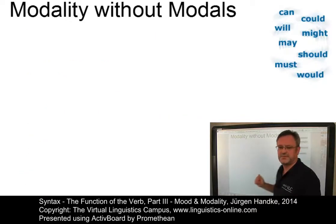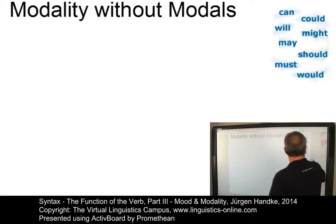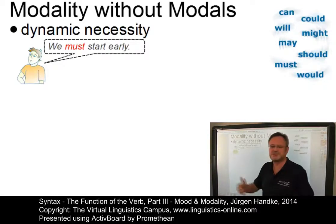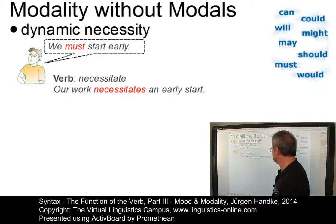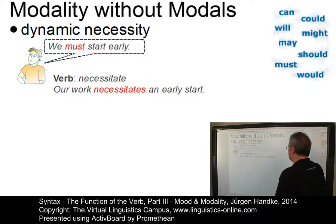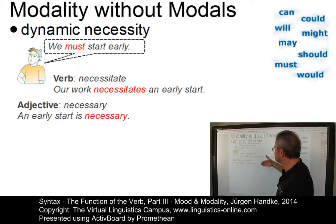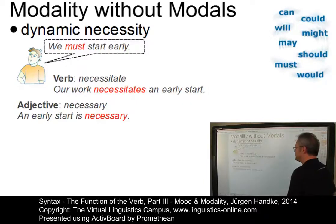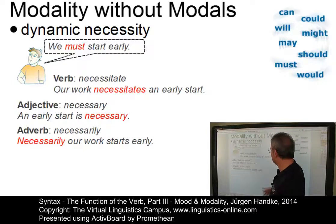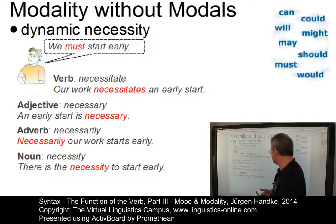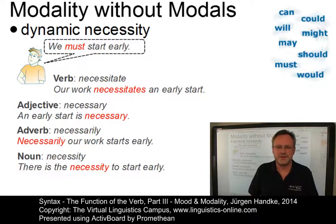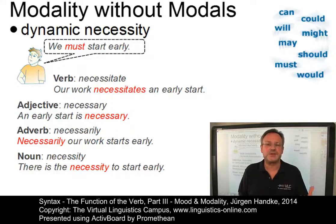For example, taking dynamic necessity — 'we must start early' — we can find alternatives using verbs: 'our work necessitates an early start'; or adjectives: 'an early start is necessary'; or adverbs: 'necessarily our work starts early'; or nouns: 'there is the necessity to start early'. The central means to express the different kinds of modality in present-day English, however, are the modal verbs.